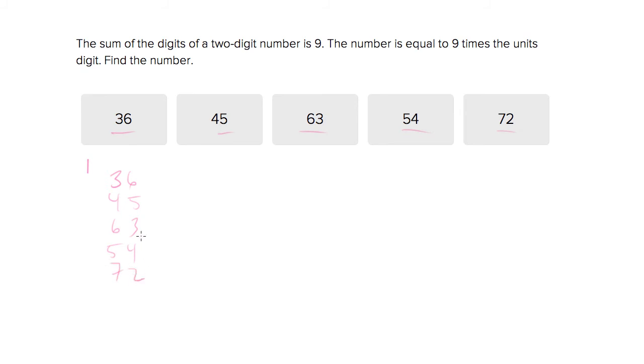So is 36 nine times six? No, nine times six is 54, so they're not equal. So 36 is not the answer. Is 45 equal to nine times five? Nine times five is 45, so in fact, this is the answer.